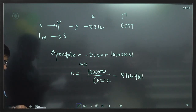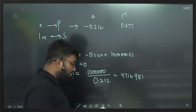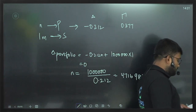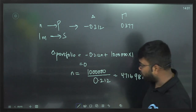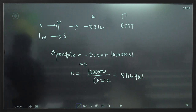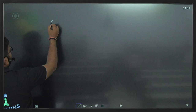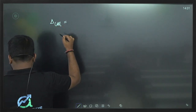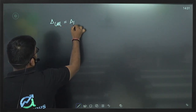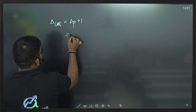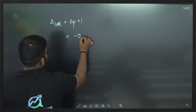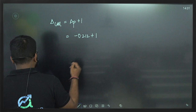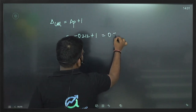Two derivatives are now added to the portfolio — a call option C and a new derivative D, with given delta and gamma. Calculate the number of units of C and D needed so that both delta and gamma of the expanded portfolio are 0. First, find delta of call: delta of call = delta of put + 1 = −0.212 + 1 = 0.788.